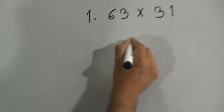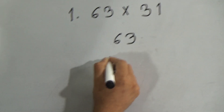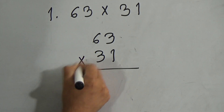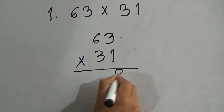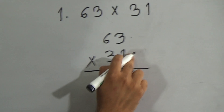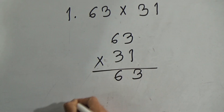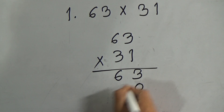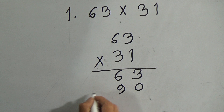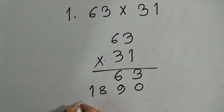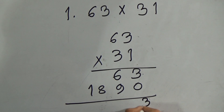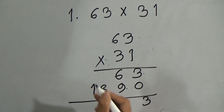First of all, you have to arrange the numbers this way. Three ones are three, and six ones are six. Then use zero. Three threes are nine.